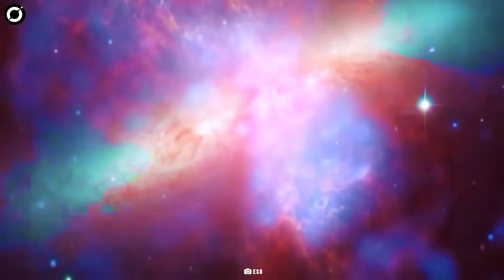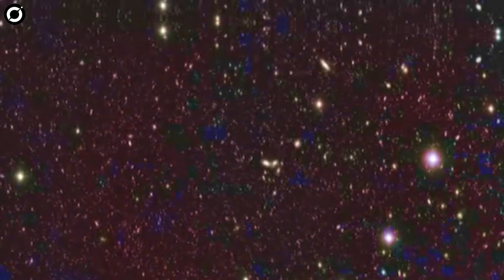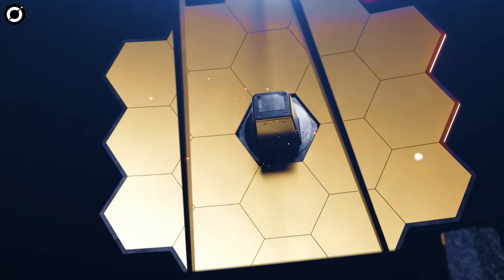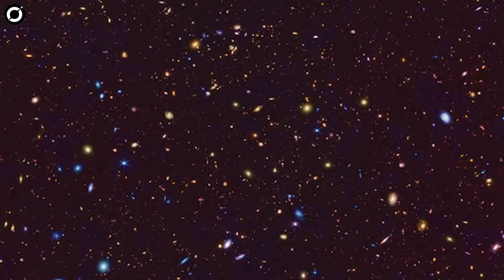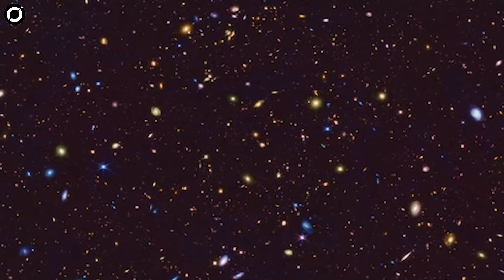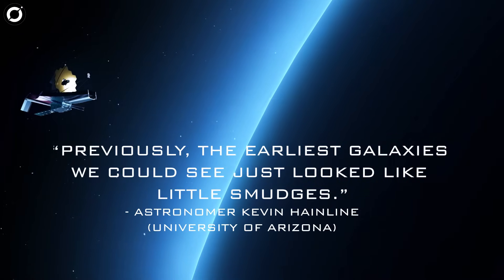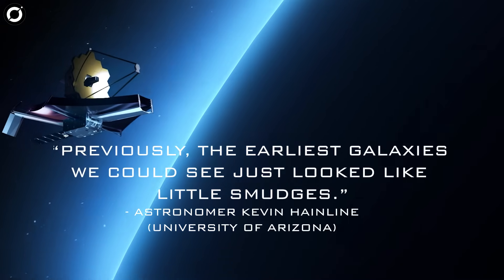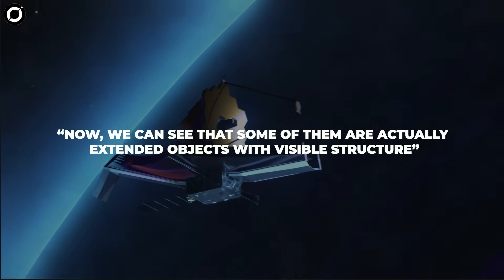But JWST is by far the most powerful telescope to turn its sights on GOODS, and the results show it. This recent image from Webb offers astronomers an unprecedented detailed look back in time. Previously, the earliest galaxies we could see just looked like little smudges, astronomer Kevin Hainline of the University of Arizona said in a statement. Now we can see that some of them are actually extended objects with visible structure.